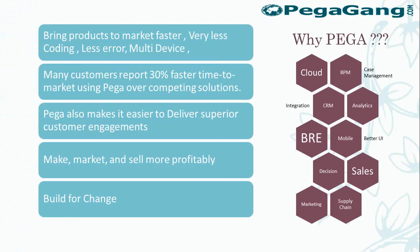Pega provides a lot of features. It can be used as a BPM product, it can be used as a CRM product, or it can be used as a business rule engine. So there are different ways we can use Pega — BPM, CRM, BRE — that is, business process management, customer relationship management, or business rule engines.